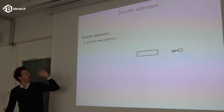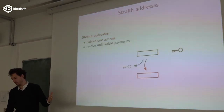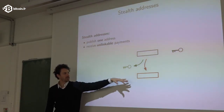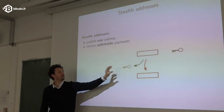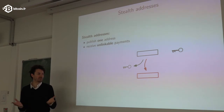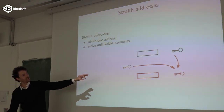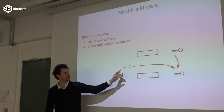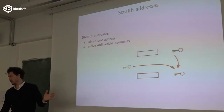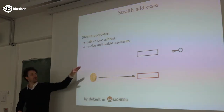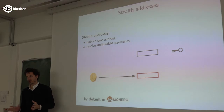In a stealth address, you publish just one address with its corresponding secret key. If someone wants to send you money, they create a new address that is somewhat related to your address but looks completely different — no one can see they're related. They also publish a transfer key. The property is that if you know the key of the original address plus the transfer key, you can derive the secret key for the new address, allowing you to spend those coins. This is implemented by default in Monero.